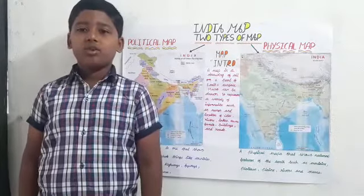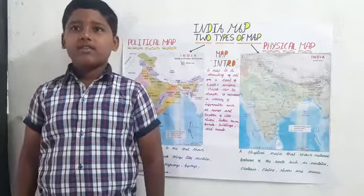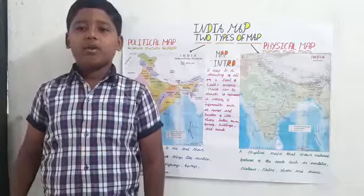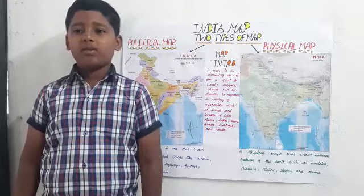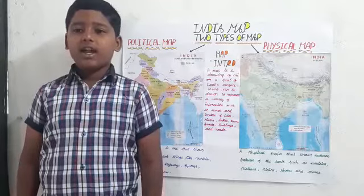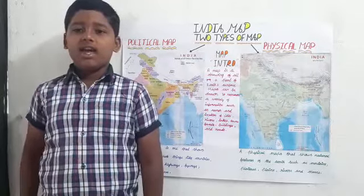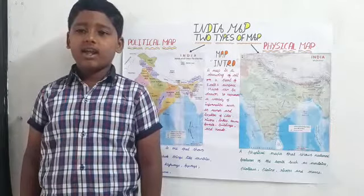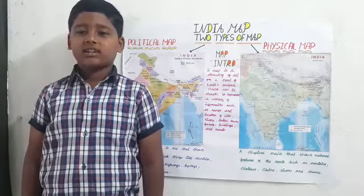There are two types of maps: political map and physical map. A political map is one that shows features, which can include things like countries, states, towns, major highways, byways and water structures.